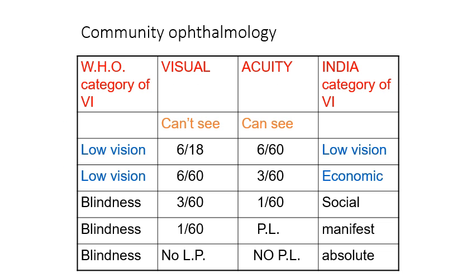There is a table showing the WHO category of visual impairment and the India category of visual impairment. You have to know this table because in your VIVA examination I will ask this question. What is low vision? What is blindness? What is economic blindness, social blindness, manifest blindness and absolute blindness? These are the questions that will be asked in your VIVA examination.